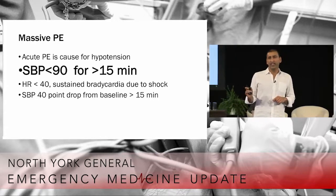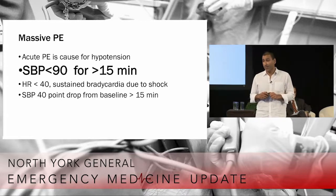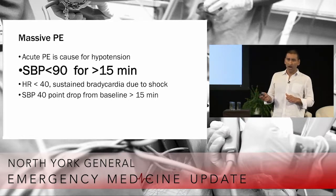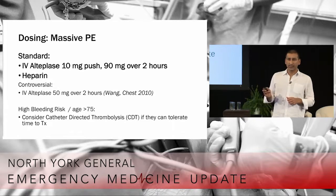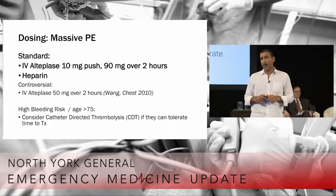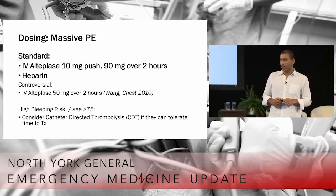All the societies — Chest, the American College of Cardiology, the European societies — all agree that this person should receive thrombolytics. The definition of massive PE is sustained hypotension for greater than 15 minutes; bradycardia and shock is also included. A substantial sustained drop from baseline blood pressure can also be considered a massive PE. Standard dosing is 10 milligrams of alteplase push, then 90 milligrams over two hours. There's also weight-based dosing at 1.5 milligrams per kilogram. Heparin is administered alongside.